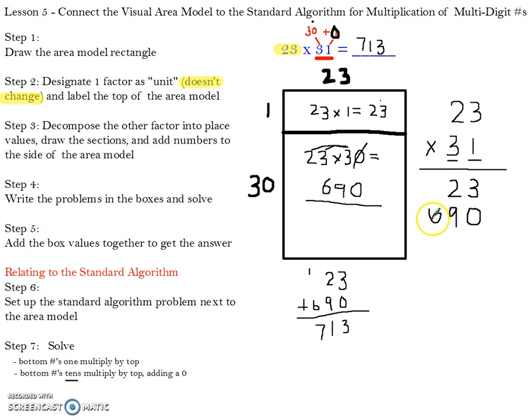Making sure again that you're lining up those place values. Then we add those two numbers together, which is 3 plus 0 is 3, and 2 plus 9 is 11. We leave the 1 and carry the 10. 1 plus 6 is 7.